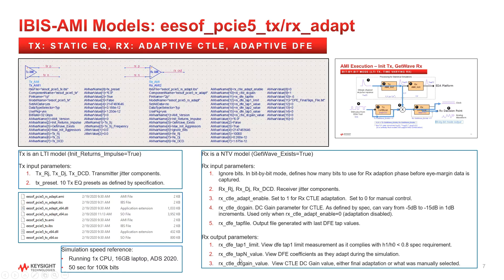The receiver model also provides the user the ability to enable or disable automatic CTLE adaptation. If the adaptation is disabled, users can set the CTLE DC gain value manually. Per the spec, the DC gain can vary from minus 5 dB to minus 15 dB in 1 dB increments. Users can also provide a file name for the final DFE tap values to be written to. Also available in the receiver model are AMI parameter outputs, which allow users to plot parameter versus time to observe behavior at different time points in the simulation. The receiver provides the DFE tap 1 limit measurement, all three DFE tap coefficients, and the CTLE DC gain. If the receiver CTLE is set to adapt, this DC gain parameter output will inform users which DC gain value the model chose to simulate with.